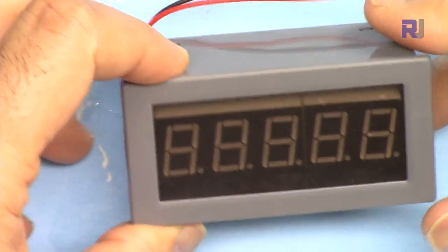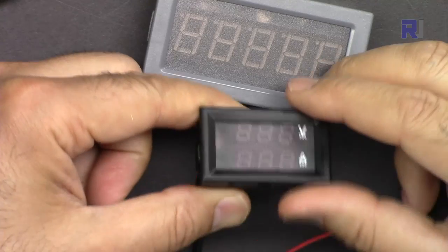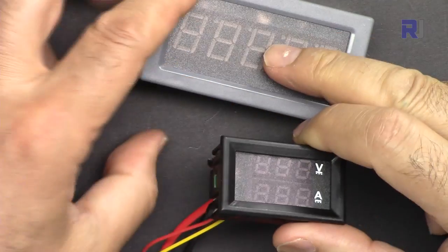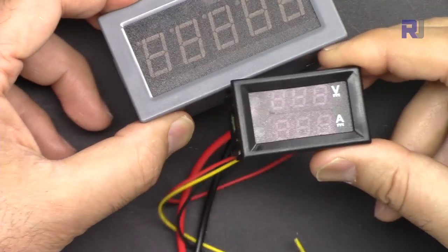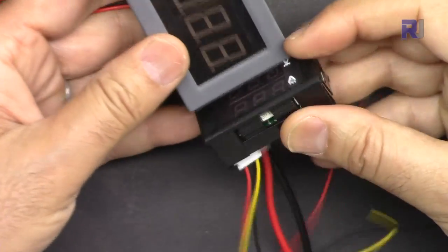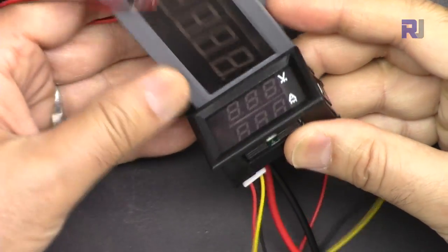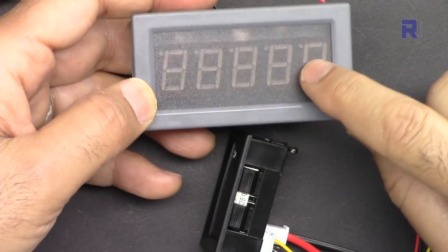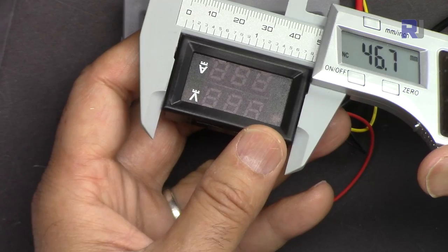Wow, this is huge. If we compare it with this meter that I've reviewed, this has voltage and current but this is just a current. If you see in terms of size this is almost like three times, so this is much larger. The length is 46.7 and this is 78.9.